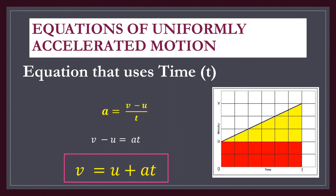Equations of uniformly accelerated motion. The first equation uses time. Starting from a equals (v minus u) over t — where A is acceleration, V is final velocity, U is initial velocity, and T is time — we rearrange to get V minus U equals AT, then add U to both sides, giving the first equation: V equals U plus AT.